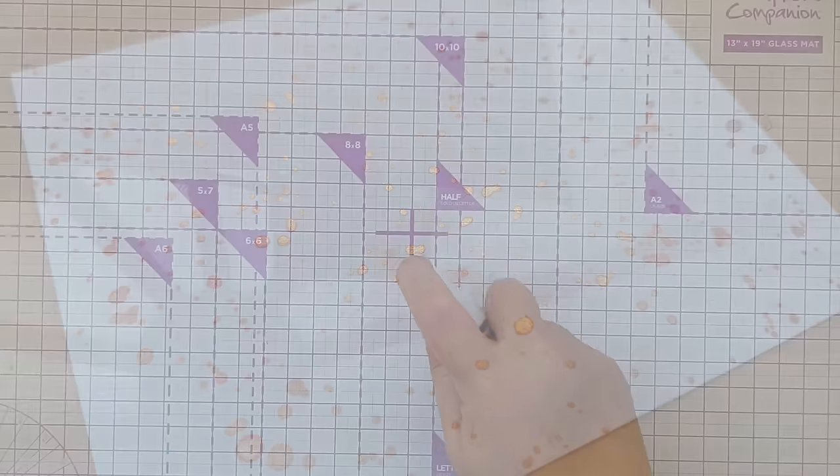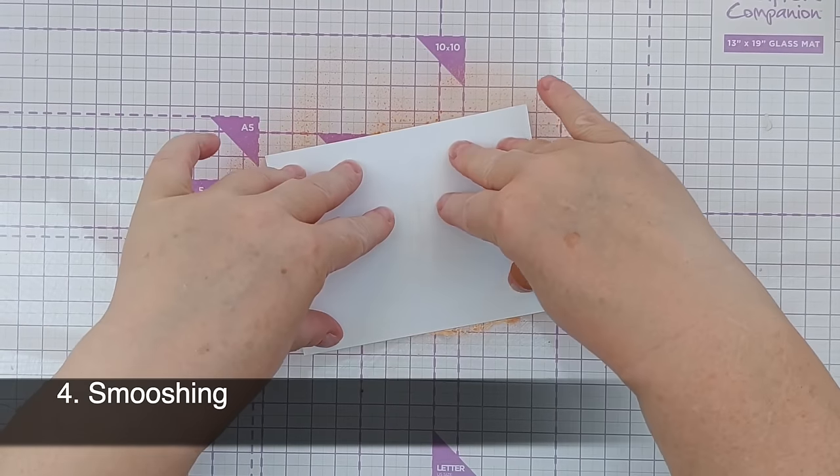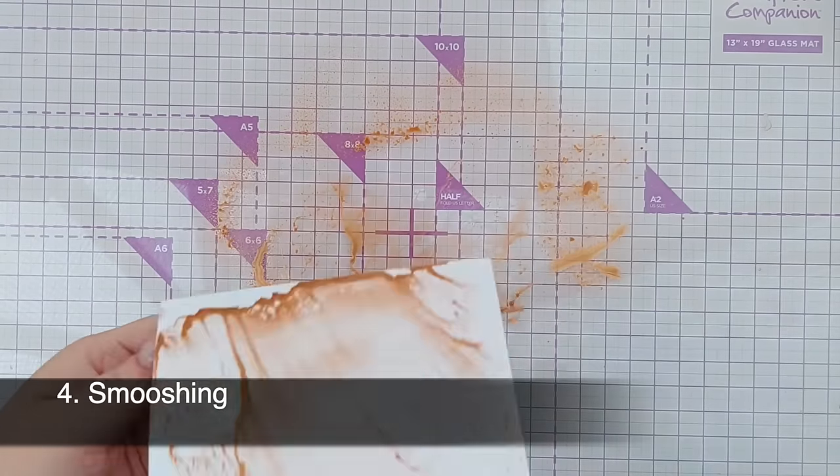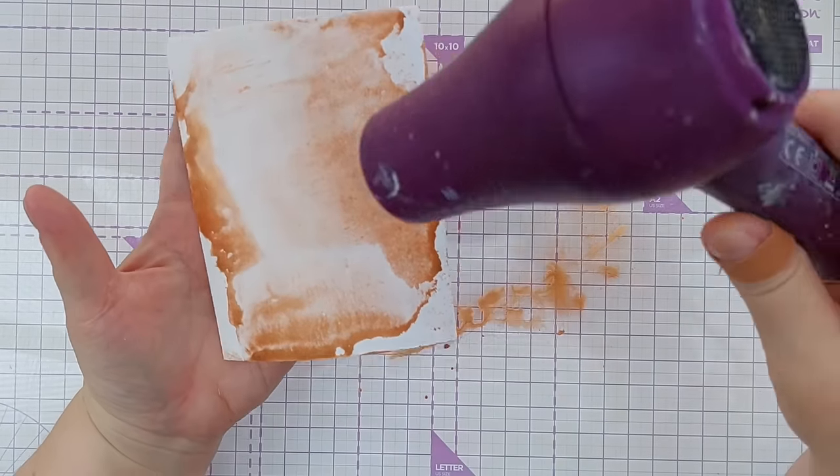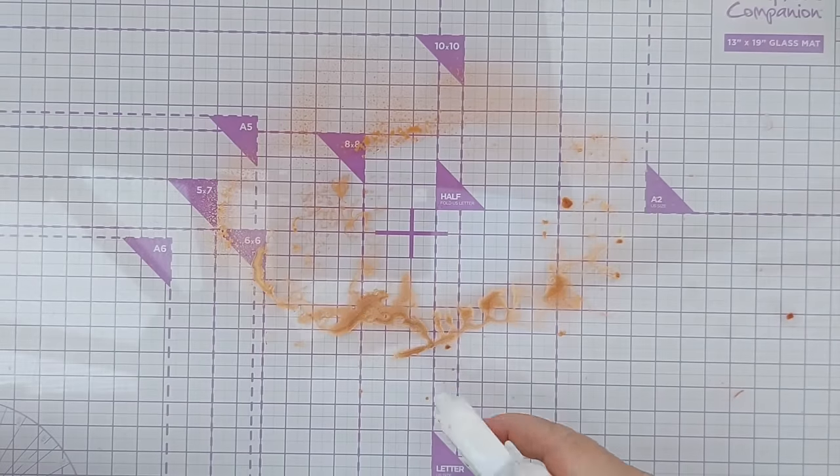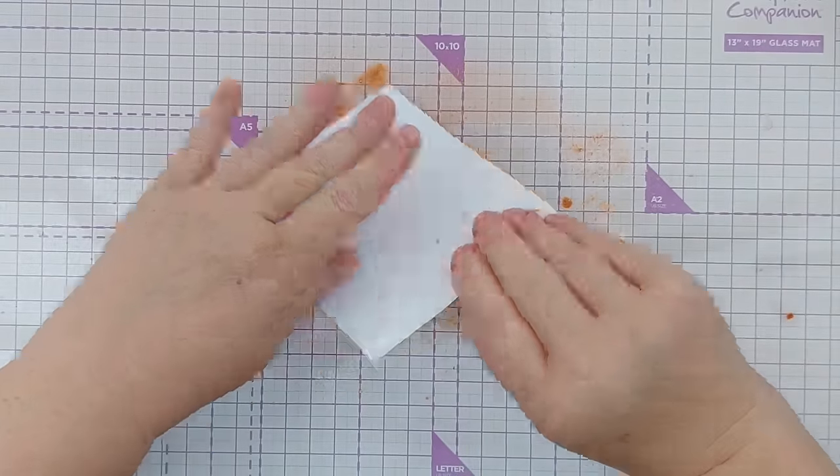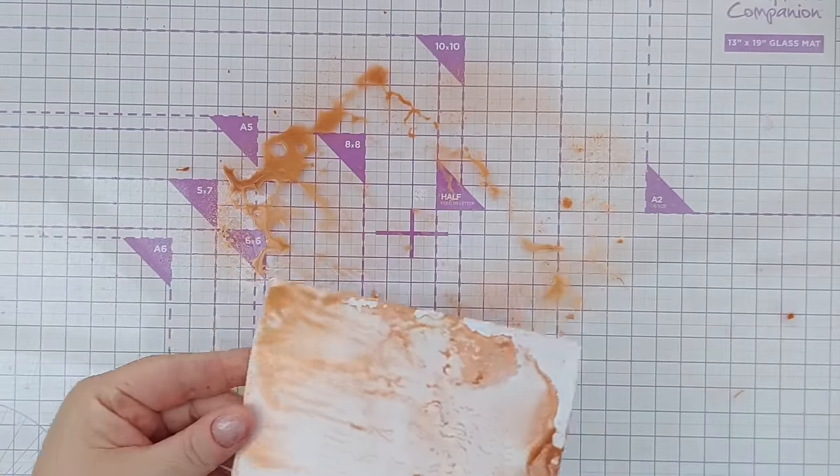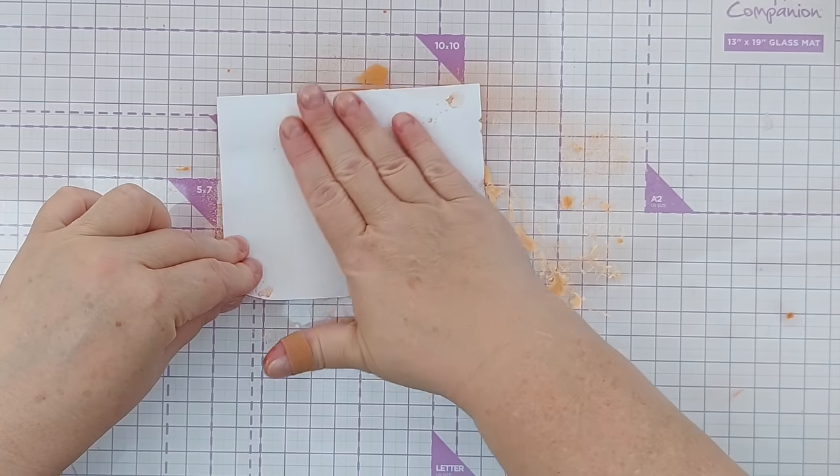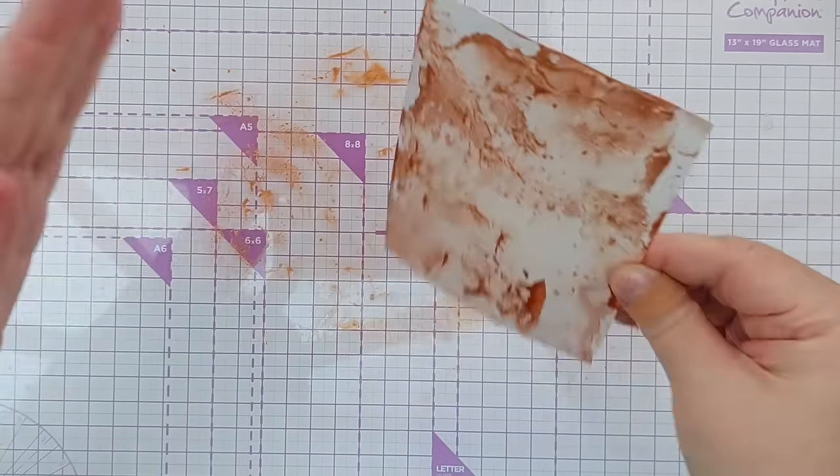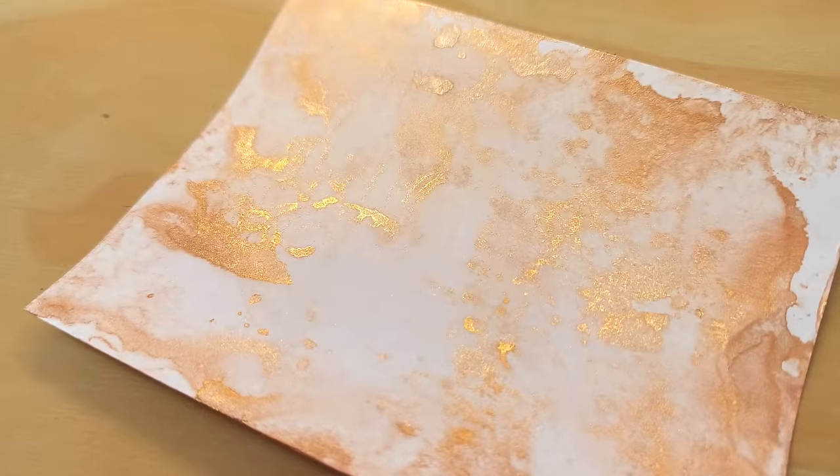Technique number four is one of my favorites. It's a smushing technique. So I spritzed the shimmer spray on my glass mat—you can use plastic packaging for this—and then I just smushed some paper down into it. All the paper I'm using today is mixed media paper. I'm using that because it's a very robust paper that will handle water well. So I smushed the paper and I dried it, then I smushed it again. I added a bit of water with a sprayer and smushed it again, and I did that several times until I had a nice smushed shimmery effect.